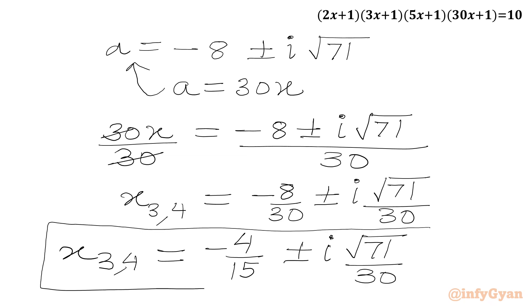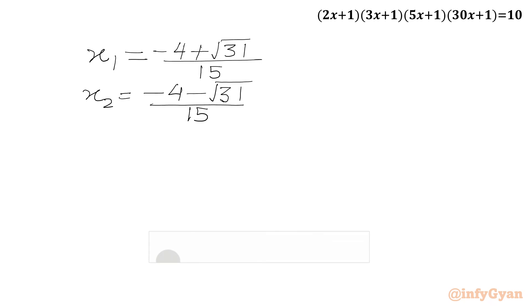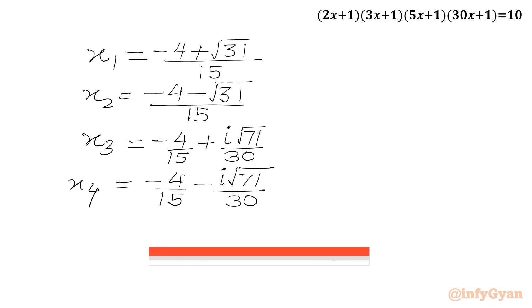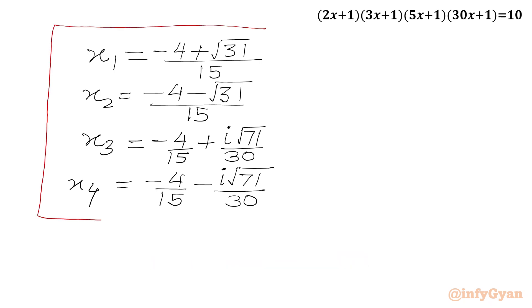So we have in total two real solutions and two complex solutions. The real solutions are x₁ = (−4+√31)/15 and x₂ = (−4−√31)/15, and the complex solutions are x₃,₄ = −4/15 ± i√71/30. I hope you liked this video. Thank you very much for watching. Don't forget to like, share, and subscribe. Bye-bye, good luck, take care.